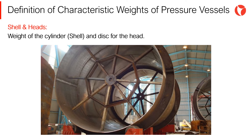The weight calculation for shells and heads is very simple. For the case of the shell, the weight of the cylinder is determined considering the thickness and the specific weight of the steel. For heads, the weight of the disc necessary to shape the head is determined.